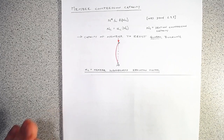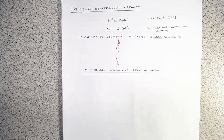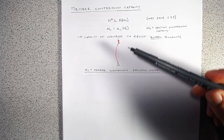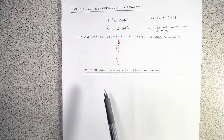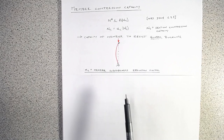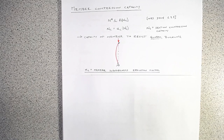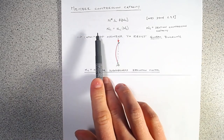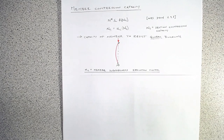In real members, alpha_c equal to one is unlikely. The longer and more slender the member gets, the lower alpha_c will be, and consequently the lower our total compression capacity.